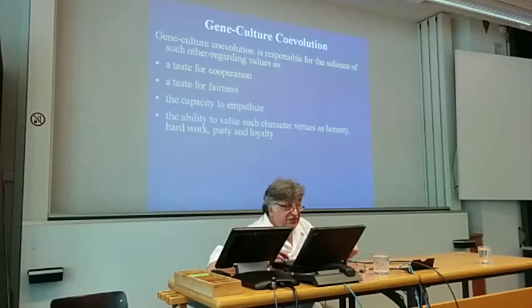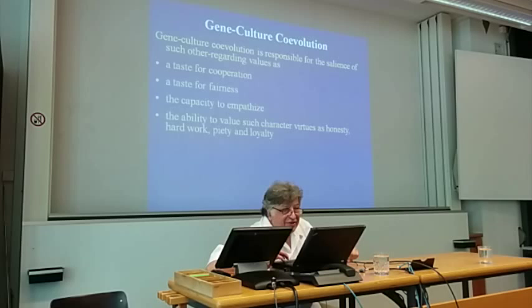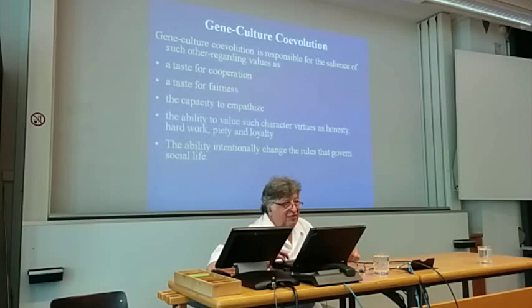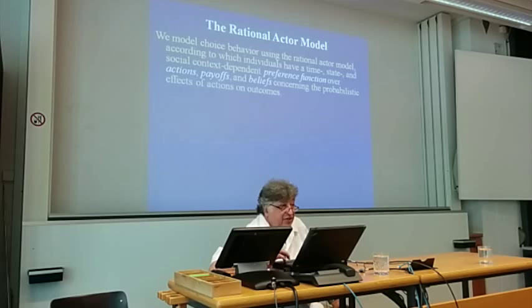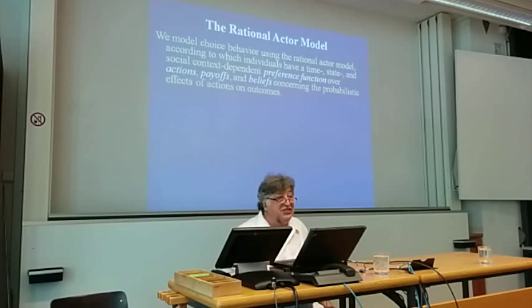Humans have the capacity for character virtues — the idea of honesty, hard work, piety, loyalty. We're capable of having those. Other animals have no such behavior. Monkeys may tell the truth, but not because they have a concept of honesty and feel morally pure when they are honest. Also, we have the ability to intentionally change the rules that govern our social life. Social species all have political and social structures, but those structures are not changed through the collective action and forward-lookingness of the agents involved to make conditions better for humans.